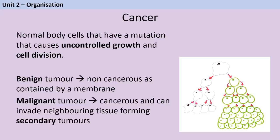Cancer is another non-communicable disease. It occurs when normal body cells undergo a series of mutations leading to uncontrolled growth and cell division — whereas a normal cell divides a set number of times before stopping and eventually dying, a cancer cell continues to divide, grows its own blood vessels, and just gets bigger and bigger. When this begins to happen, the tumour can be classified as either benign (contained by a membrane, staying in one part of the body and not considered cancerous) or malignant (cancerous, potentially invading neighbouring tissues and forming secondary tumours in other organs).